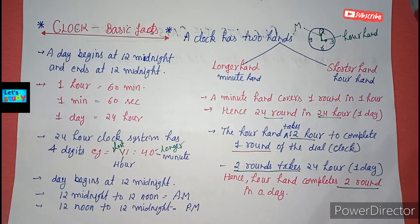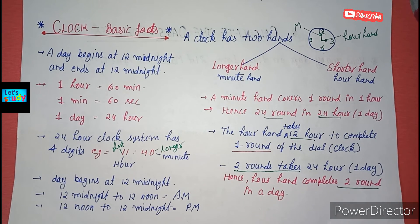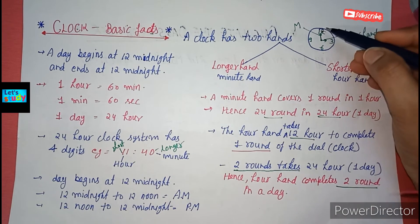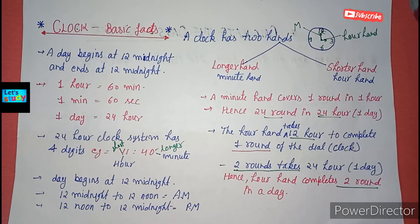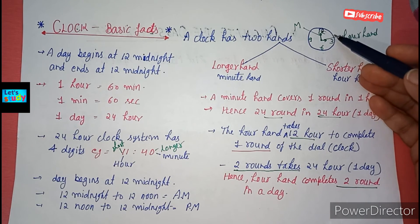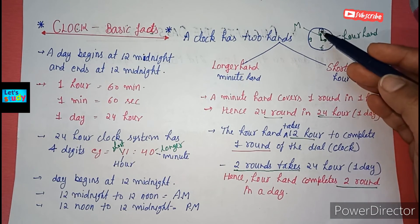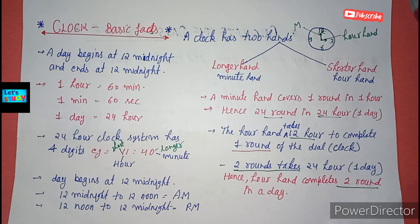When we talk about the hour hand, which is the shorter hand — in 24 hours, it completes two rounds. From 12 midnight to 12 noon, one round is complete, which takes 12 hours. Then it completes the second round in the next 12 hours.